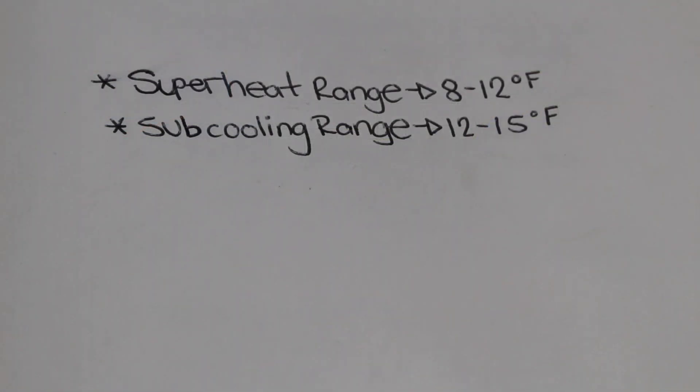Rule of thumb for superheat is 8 to 12 degrees Fahrenheit, and the rule of thumb for subcooling is 12 to 15 degrees Fahrenheit. These values might vary from one manufacturer to another depending on the type of equipment you are working on. The engineer who designed this system has predetermined these values.